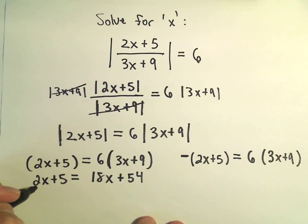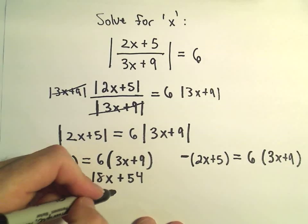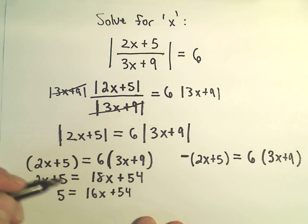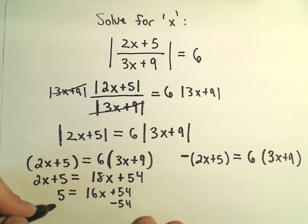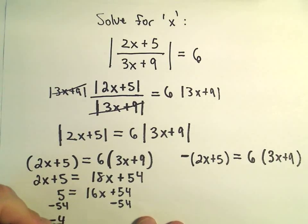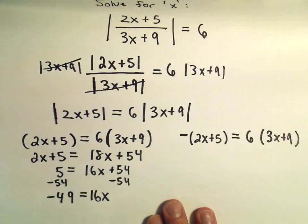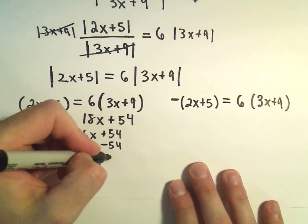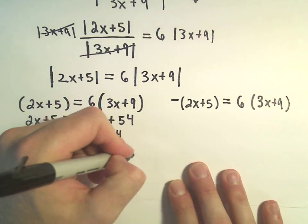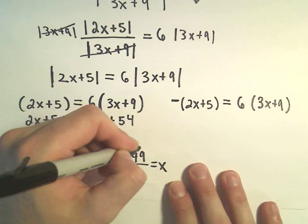I can subtract 2x from both sides. That would give me 16x on the right plus 54. Now I can subtract 54 from both sides. I think 5 minus 54 would be negative 49 equals 16x. And if we want to simply get the x by itself, we can divide both sides by 16. So that will tell us that negative 49 over 16 is one of our solutions.